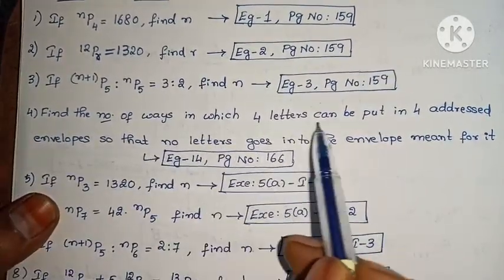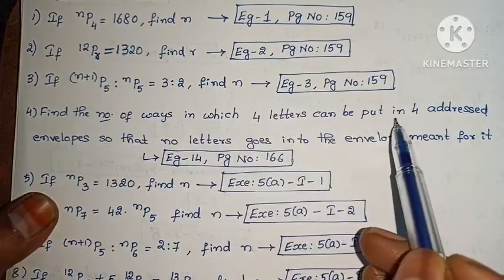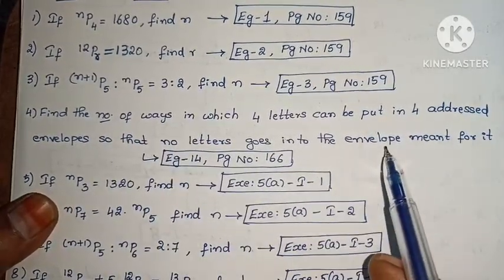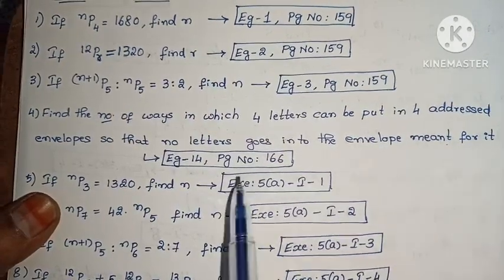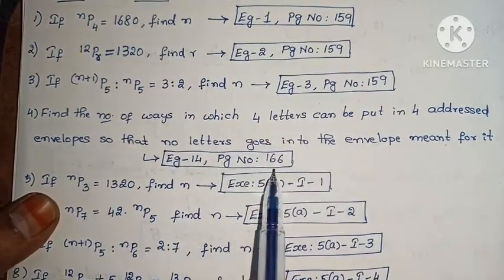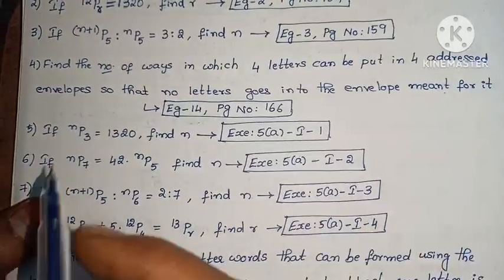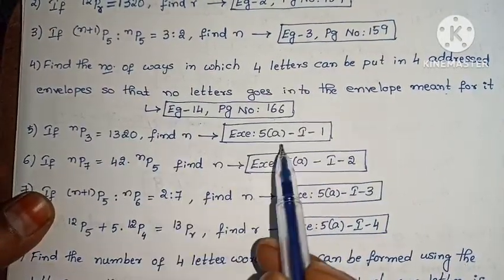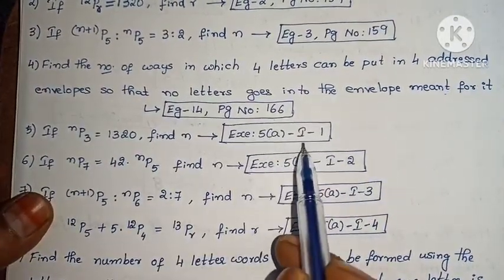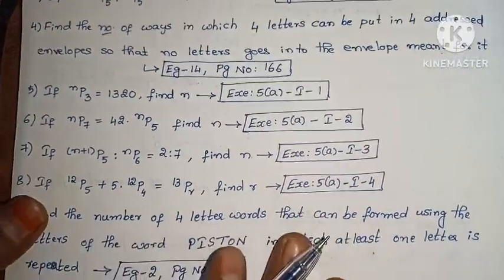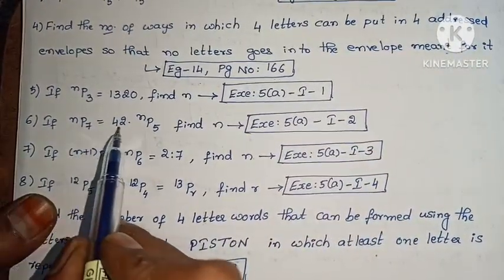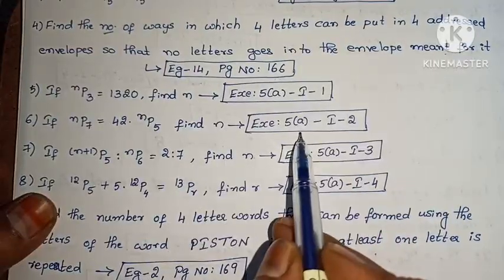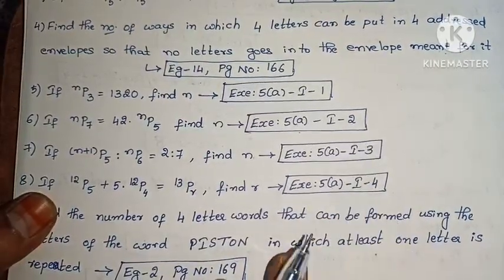Next: find the number of ways in which 4 letters can be put in 4 addressed envelopes so that no letter goes to the envelope meant for it (Example 14, page 166). Next: if NP3 equals 1320, find N (Exercise 5, Roman I, first one). Next: if NP7 equals 42 into NP5, find N (Exercise 5, Roman I, second one).